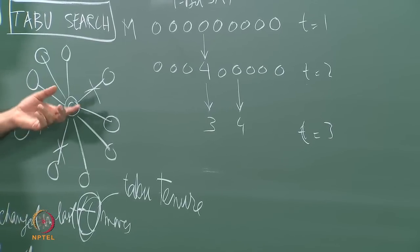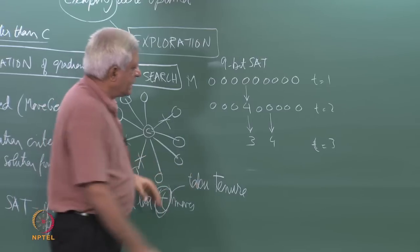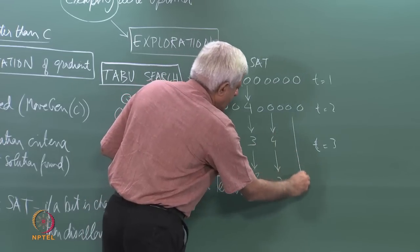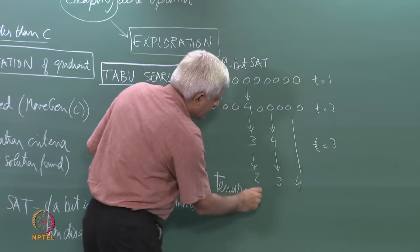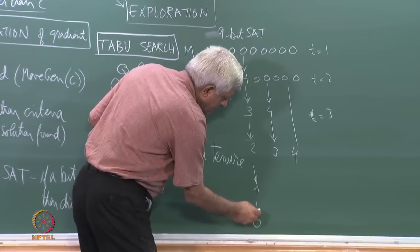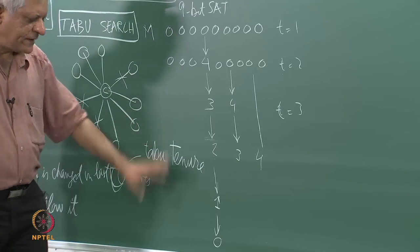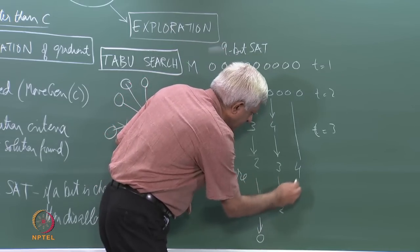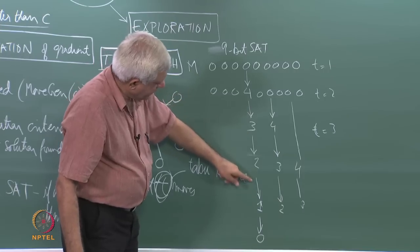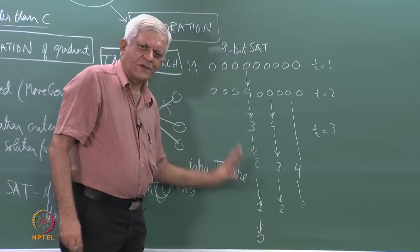So t-t stands for taboo tenure. If my taboo tenure is 4, then at each time cycle the counter decrements — this will become 3, then 2, then 1, then 0, which is when I am allowed to change it again. After having changed a bit, for 1, 2, 3, 4 cycles I am not allowed to change it, but once the value becomes 0 I am allowed to change it. This is one way of implementing it; you can also simply keep a timestamp of when the bit was last changed.